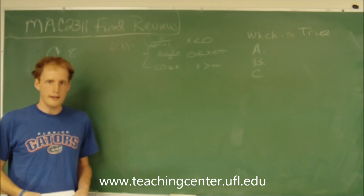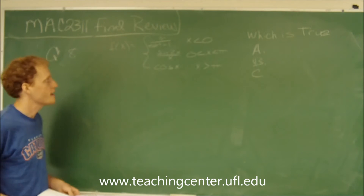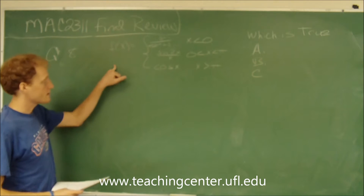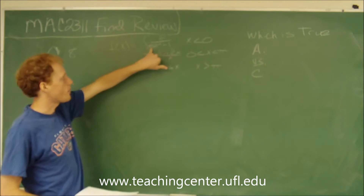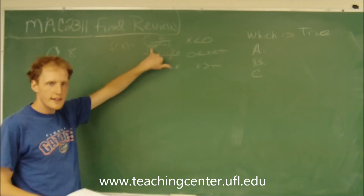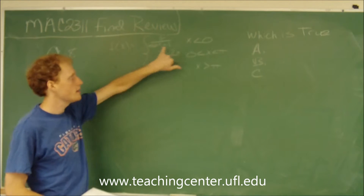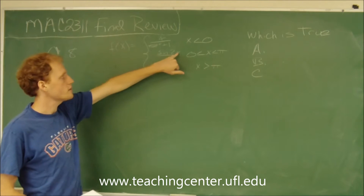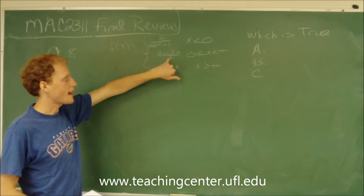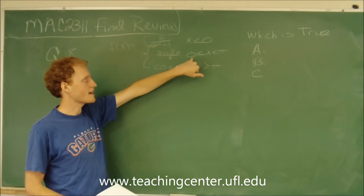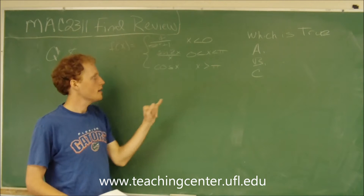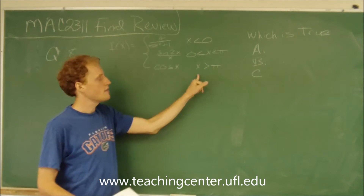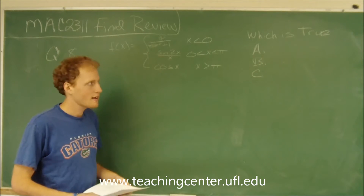This is question number 3. It says: if f of x equals 4 over e to the x plus 1, if x is less than 0; sine of 2x over x, for x is between 0 and pi; and the cosine of x, for x is greater than pi.